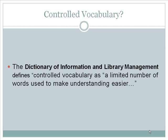The Library of Congress subject headings use controlled vocabulary to enable more precise retrieval of results. Controlled vocabulary is defined as a limited number of words used to make understanding easier.